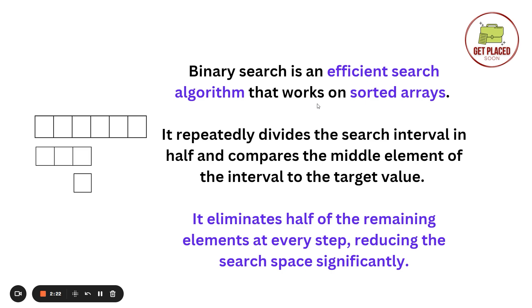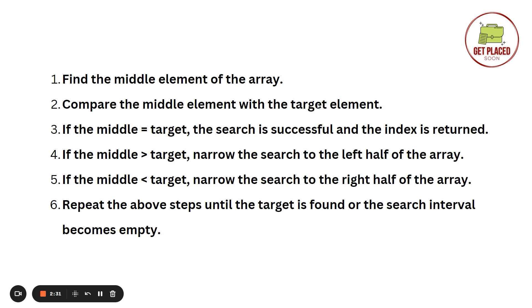Let's take an example. You have a sorted array; find the middle element, then identify the target element, and compare the middle element with the target. If middle equals target, we found the element — return the index. If middle is greater than target, narrow the search to the left half of the array, because the target will be to the left in ascending order. If middle is less than target, narrow the search to the right half. Repeat these steps until the target is found or the search interval becomes empty.